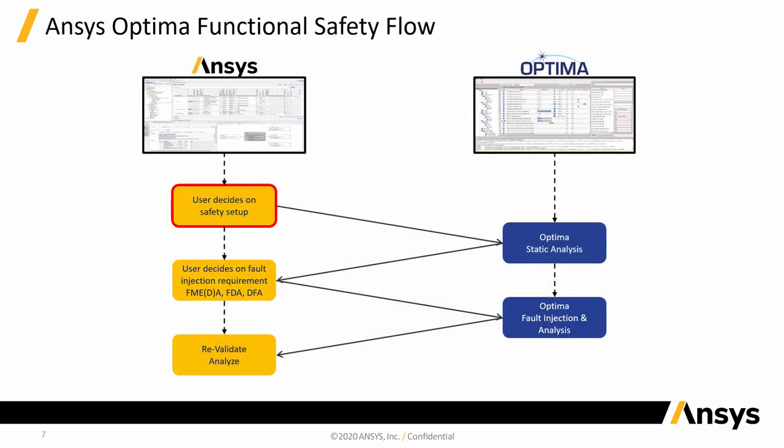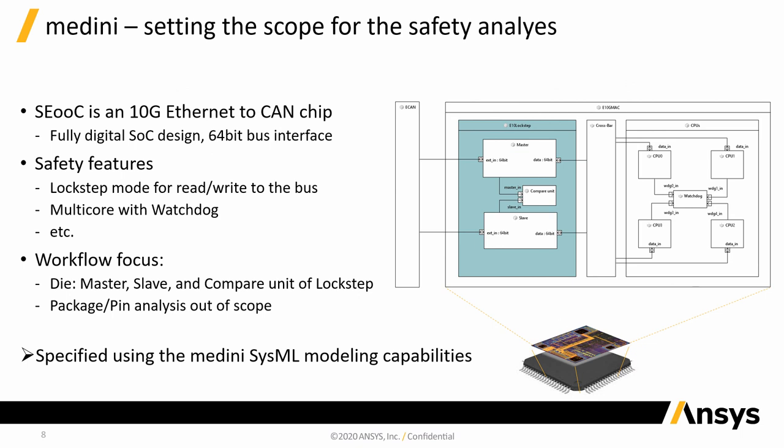I will start with an overview of the flow of activities between our tools and how functional safety data is exchanged between the Optima Safety Platform and Medini Analyze. We will use this slide whenever we change between the different tools. Everything starts as early as possible with a high-level view of the semiconductor to be developed. Our demo example is the 10G Ethernet to CAN SOC, where the main functional blocks as well as the data flow and control flow connections are captured in the architecture model.